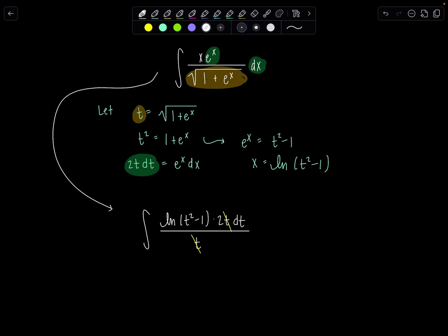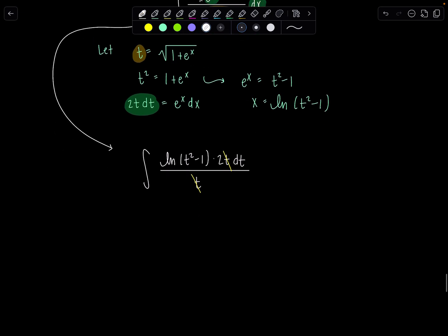And I want you to observe ln of t squared minus 1 is ln of t plus 1 times t minus 1. And I'm going to use this fact along with my logarithm properties to break it up so I can evaluate the integral. So remember, when the argument of our logarithm is a product, we can break it up into the sum of two logarithms. So we have two integral natural log t plus 1 plus natural log t minus 1 dt.